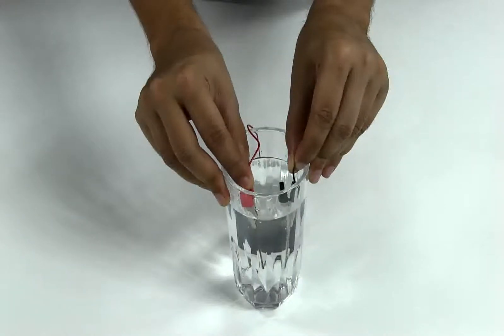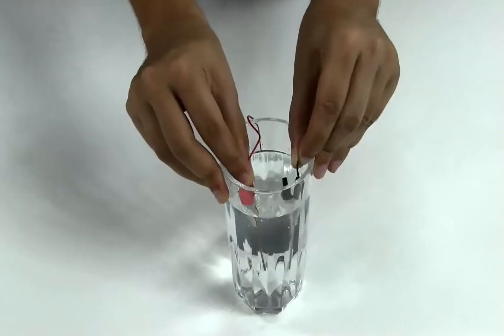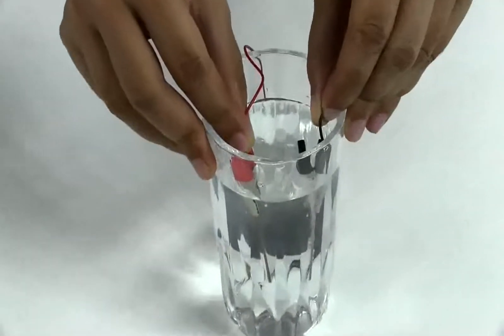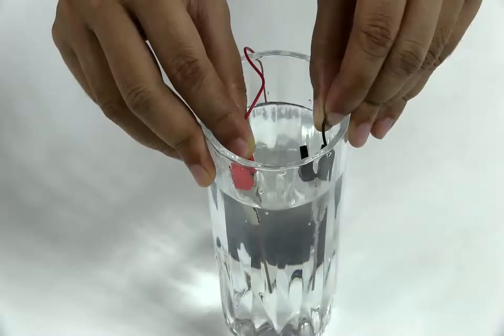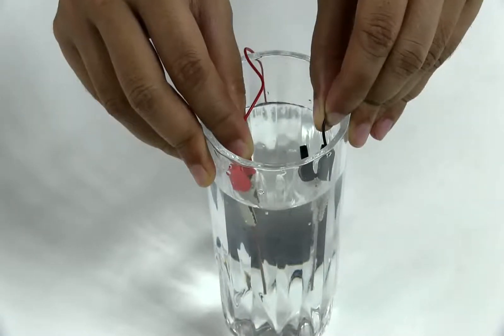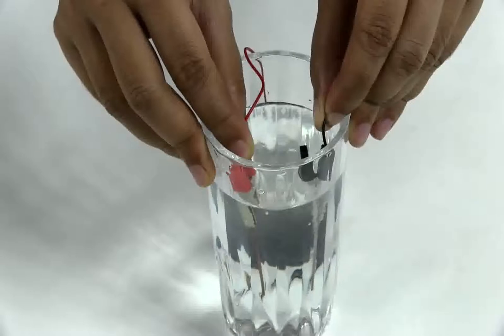At the negative end of the battery, these are hydrogen gas bubbles. At the other end, you can see that some greenish-yellow substance is forming up.